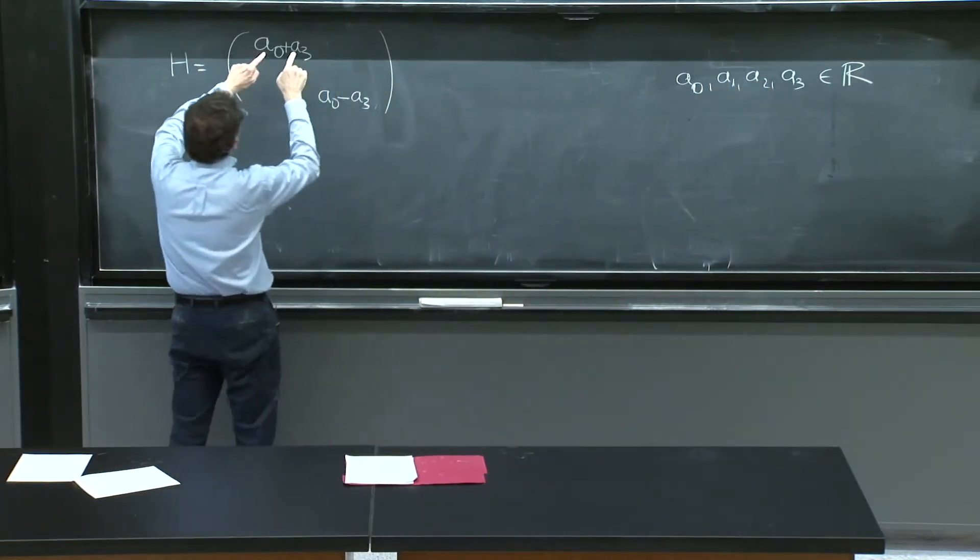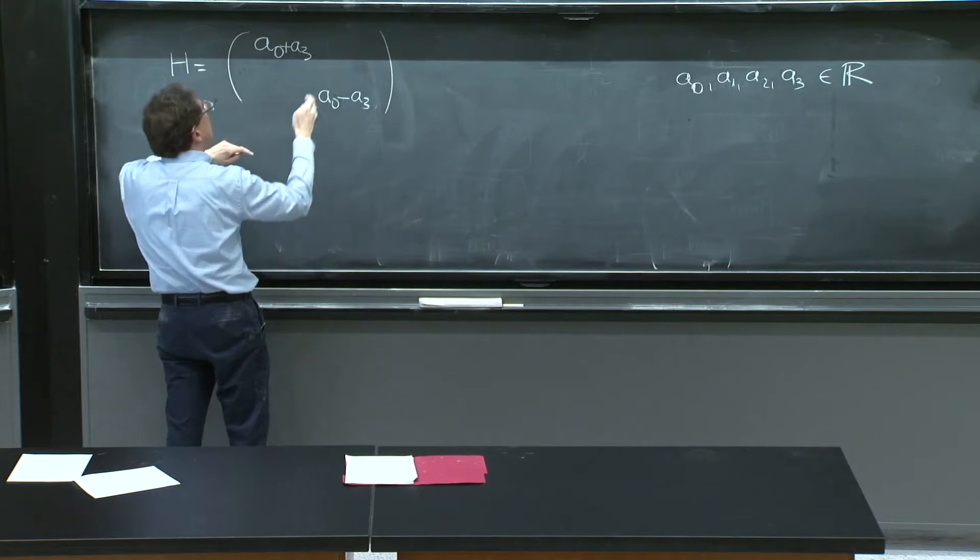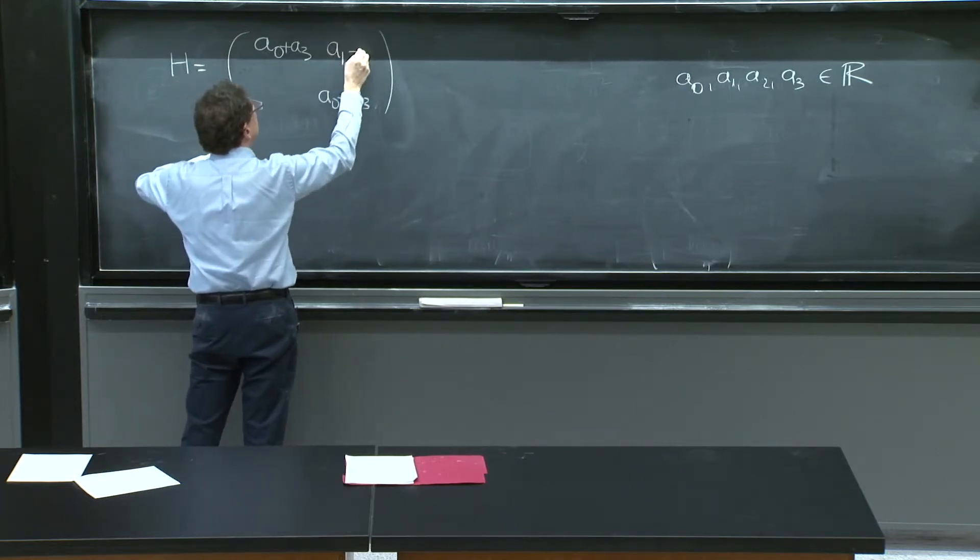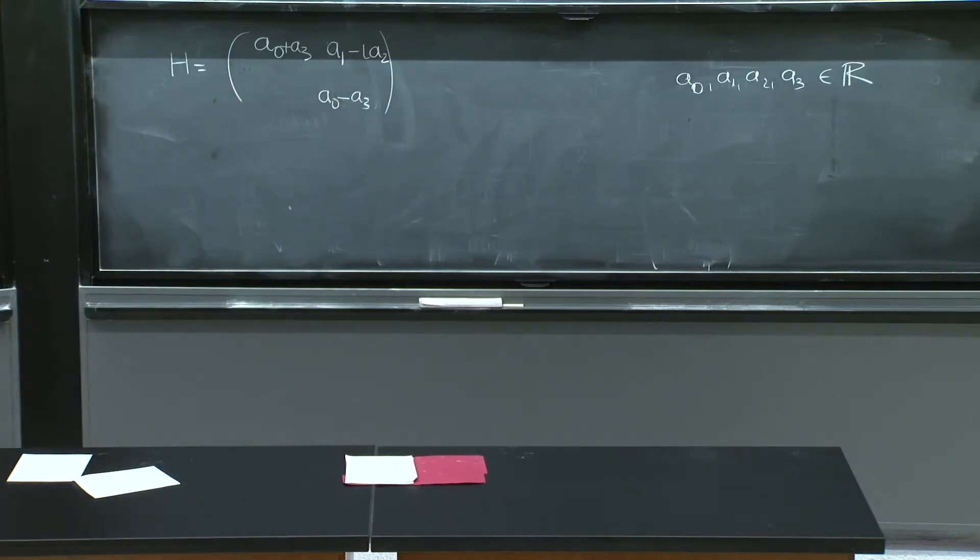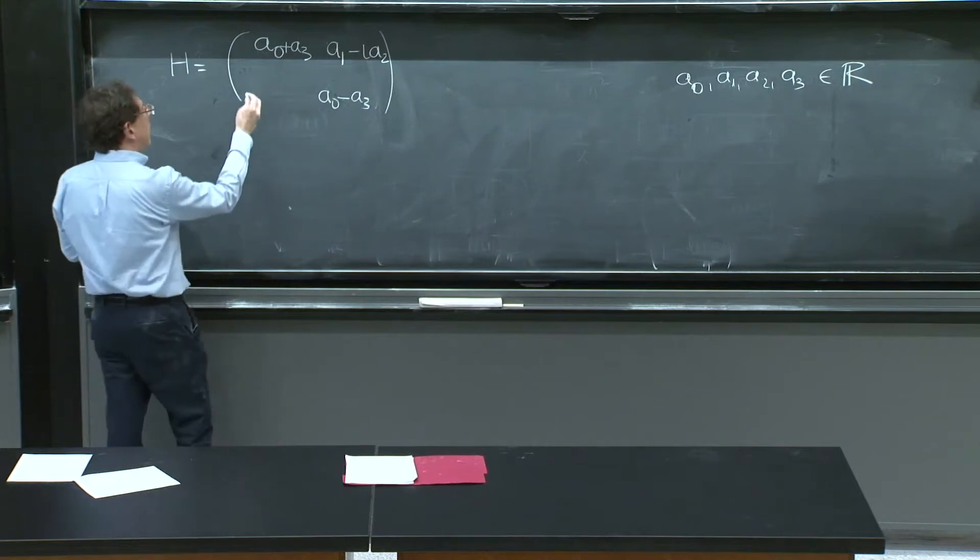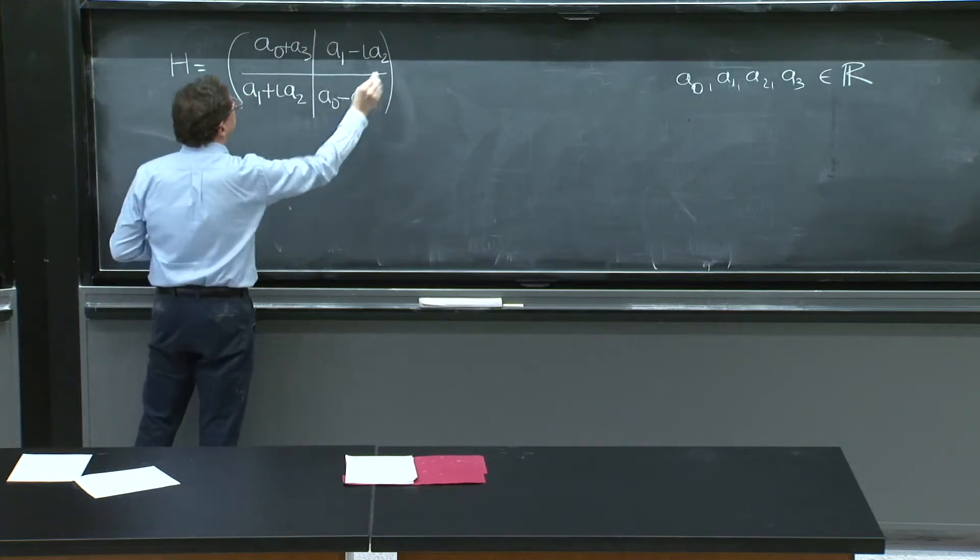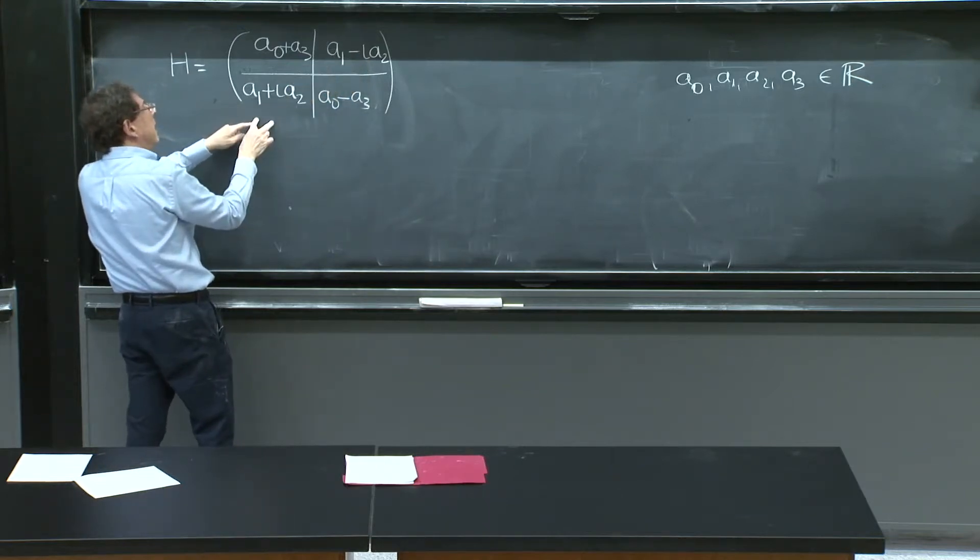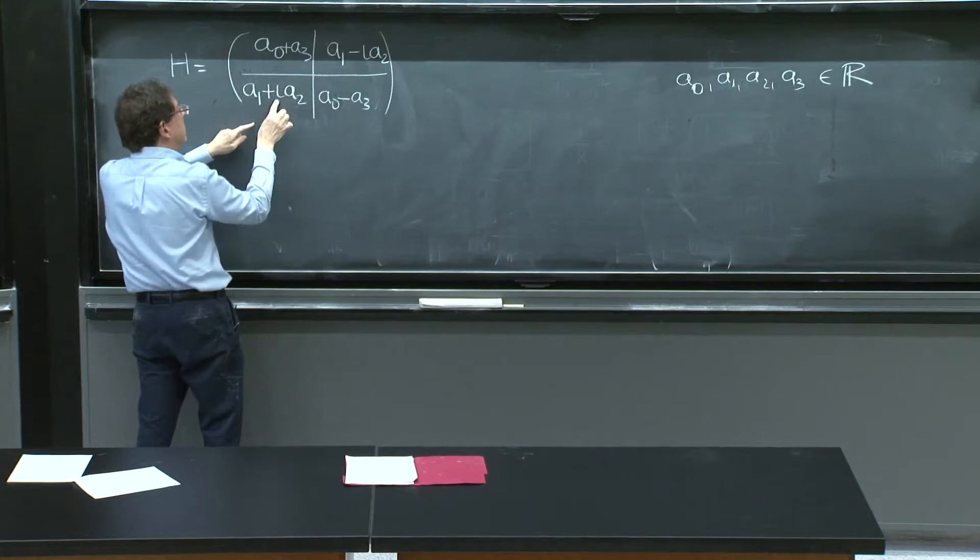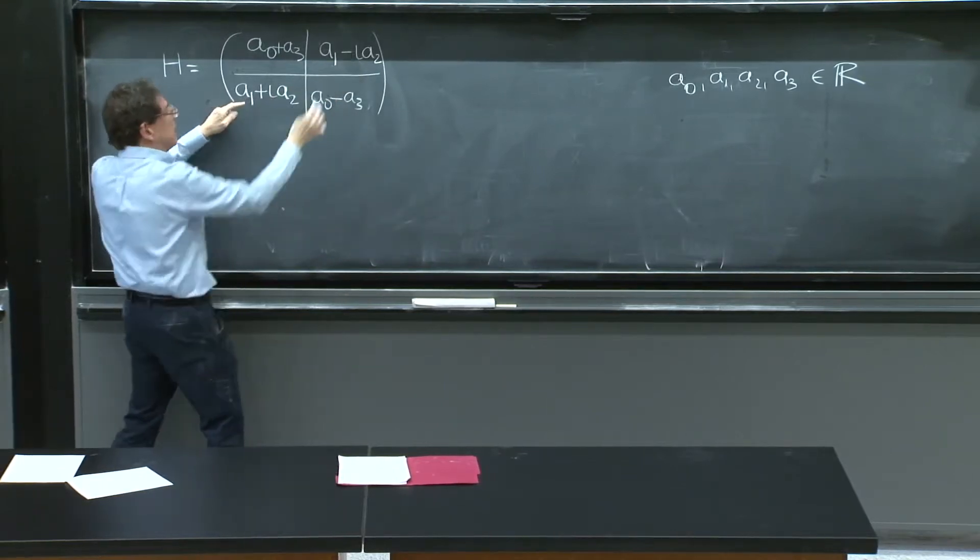So here, transpose complex conjugate doesn't affect these things. They are the same. That's good. Here we can put A1 minus i A2. This is a complex number. And the only thing that must happen is that when I transpose and complex conjugate, I must get the same thing. So I should put here A1 plus i A2. Because if I transpose this, I would have it on this side. And then I complex conjugate it, and it becomes this term. Similarly, if I transpose this term, it goes here. But then complex conjugated, it becomes that.